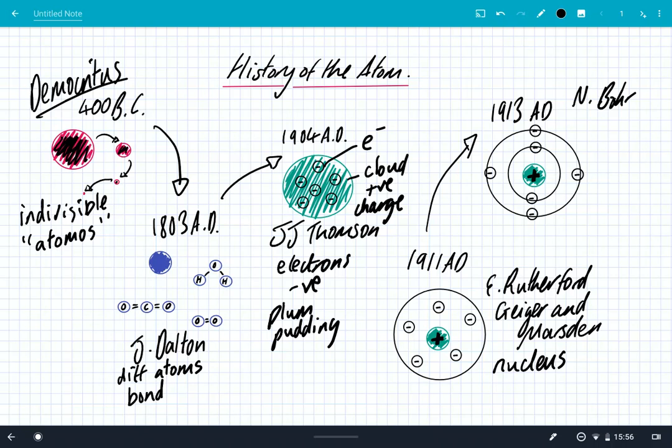Not only did Rutherford, Geiger, and Marsden discover the small, dense, positive nucleus, they also realized that atoms are 99.999% free space. So everything that you can see around you is mainly empty space. It's quite incredible.